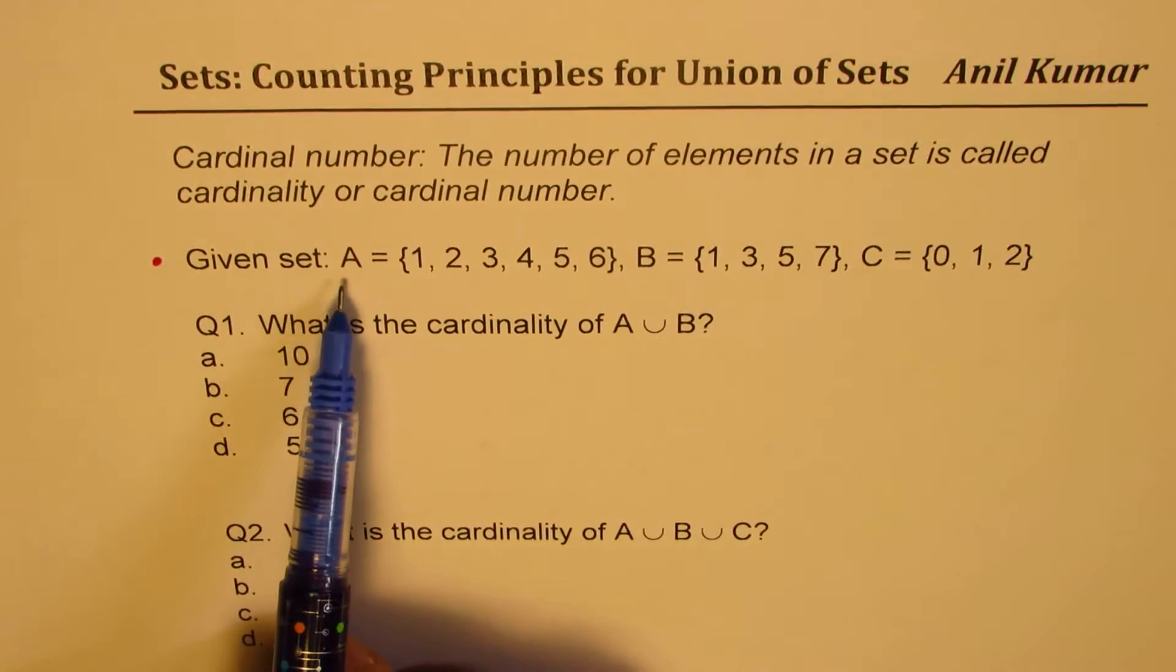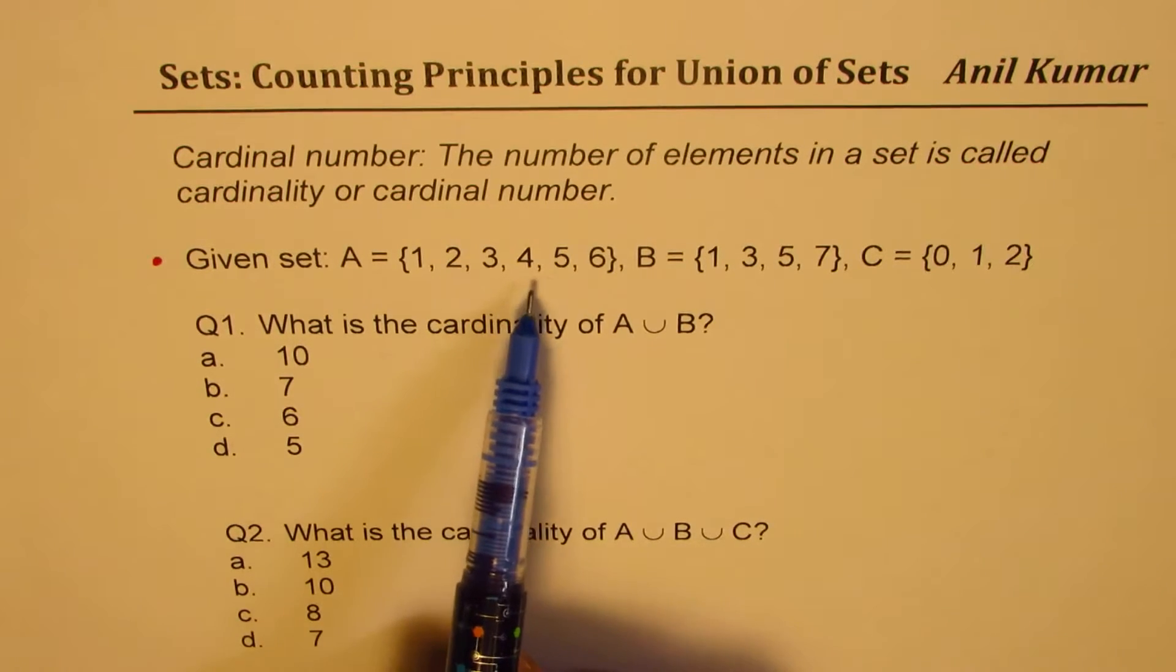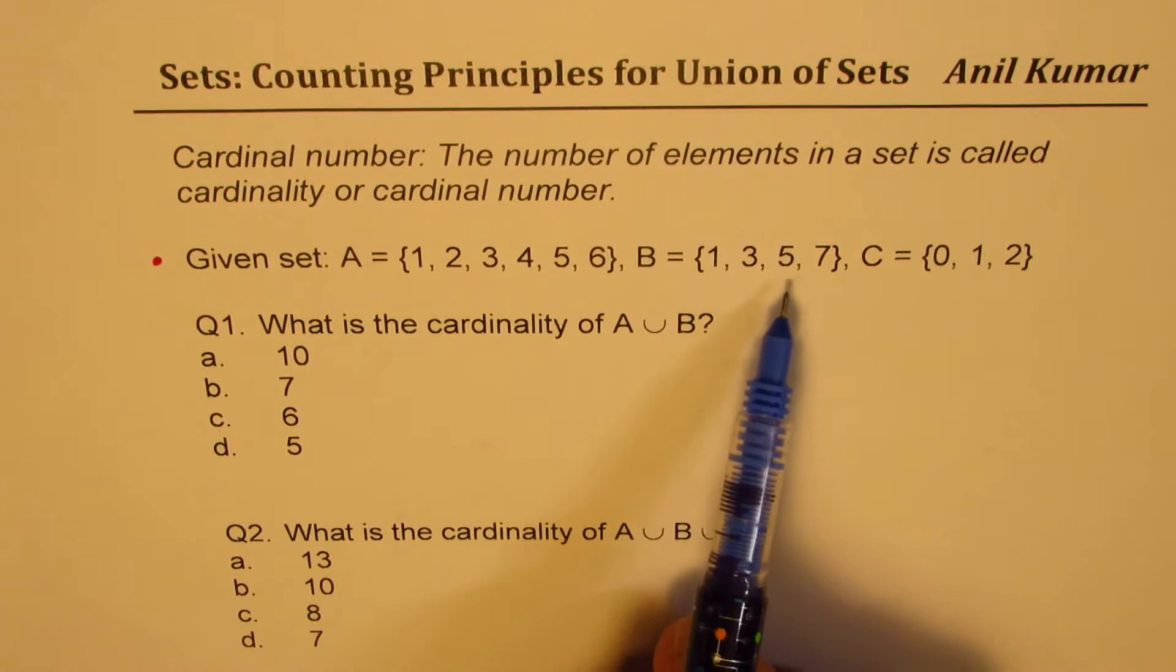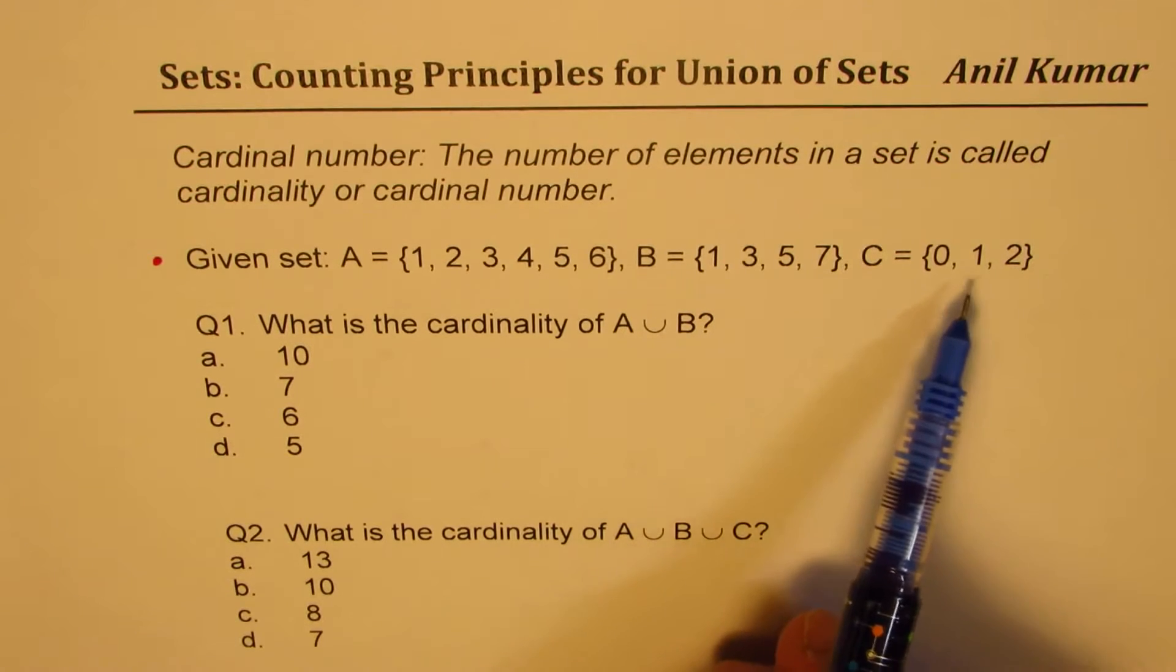We are given set A, which is 1, 2, 3, 4, 5, 6, set B, 1, 3, 5, 7, and set C is 0, 1, and 2.